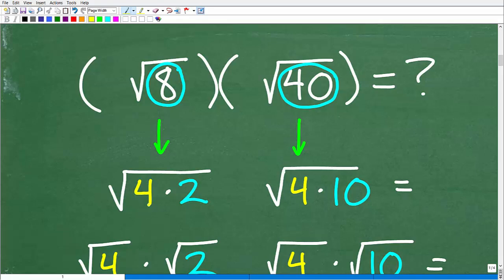So 8, I can write as 4 times 2. Oh, wow, that's great because 4 is a perfect square factor. And 40, I can write as 4 times 10. Again, 4 is a perfect square factor.